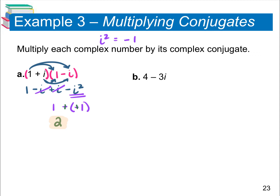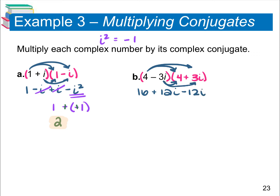For example b, we have 4 minus 3i. We're going to put parentheses around that 4 minus 3i. We're going to keep the 4, keep the 3i, but change the sign in the middle — instead of subtraction, it's going to be addition. So from here, we just foil it out. Your 4 times 4 gives you 16. The 4 times 3i is positive 12i. Negative 3i times 4 is negative 12i. And negative 3i times positive 3i is negative 9i squared.